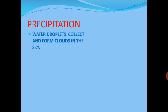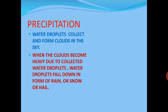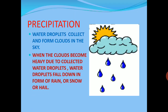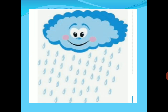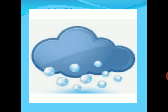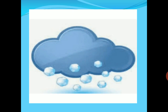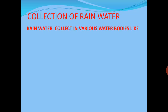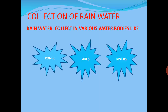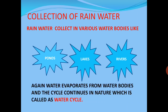Precipitation: water droplets collect and form clouds in the sky. When the clouds become heavy due to collected water droplets, water droplets fall down in the form of rain, snow, or hail. Rain water then collects in various water bodies like ponds, lakes, and rivers. Again, water evaporates from water bodies and the cycle continues in nature, which is called the water cycle.